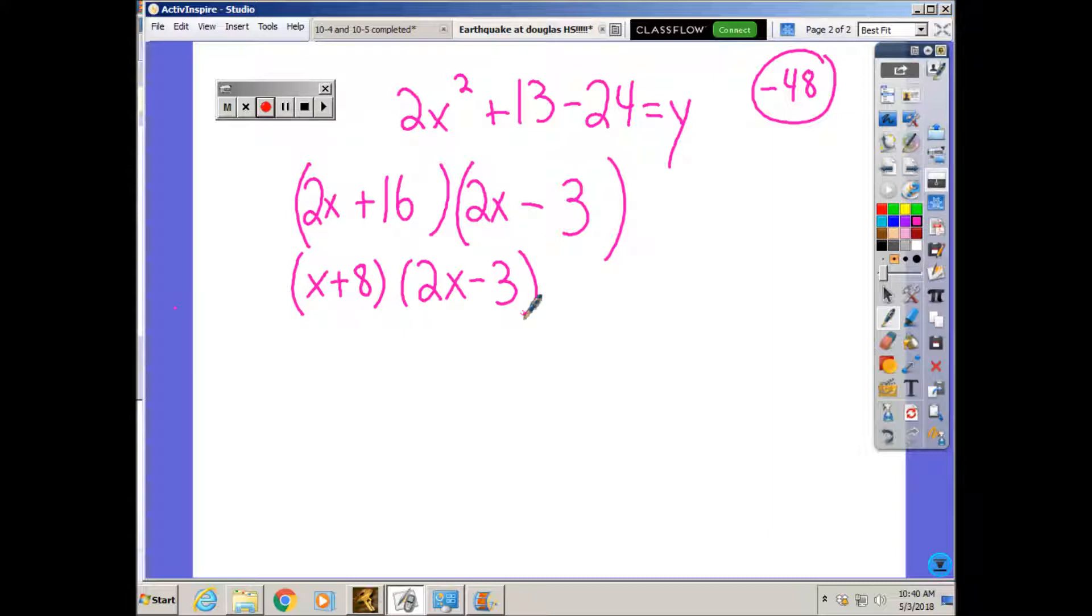That's the factored form. To get my x intercepts, I have to set these each equal to 0. That means x plus 8 equals 0. I subtract 8 from both sides and x equals negative 8.